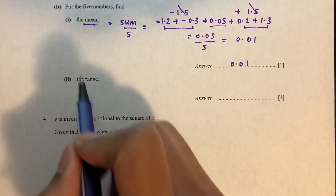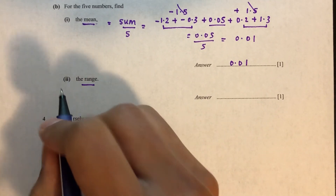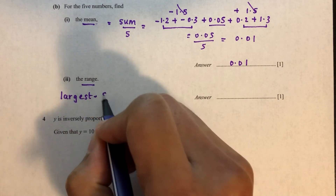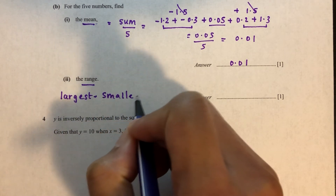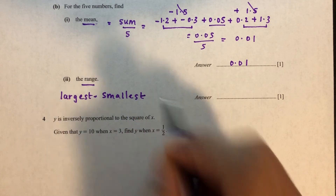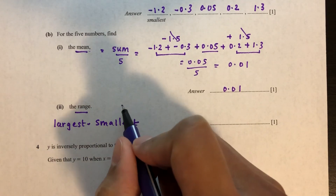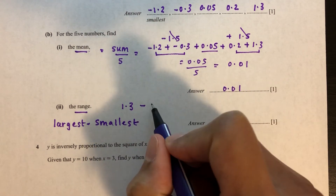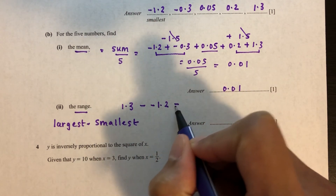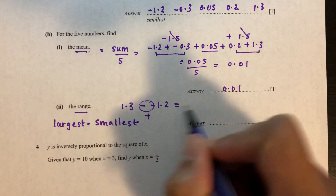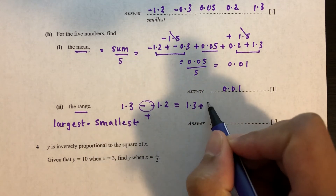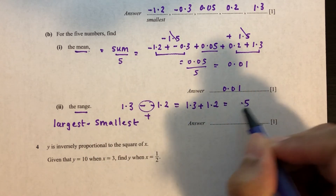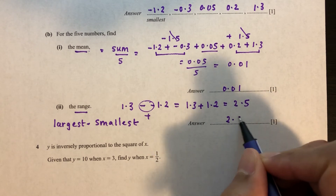Part C: find the range of the numbers. The range is the largest value minus the smallest value. The largest value is 1.3 and the smallest is minus 1.2. So 1.3 minus minus 1.2 becomes 1.3 plus 1.2, which is 2.5. So 2.5 is the range.